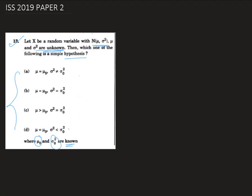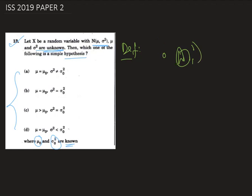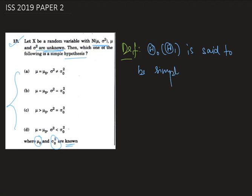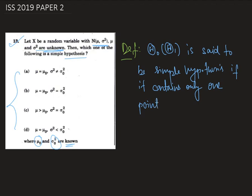Now by definition, a hypothesis Θ₀ or Θ₁ is said to be a simple hypothesis if it contains only one point; otherwise we call it composite.